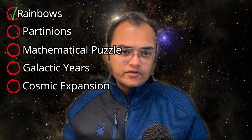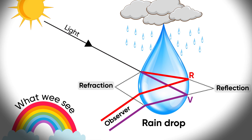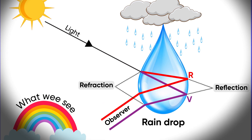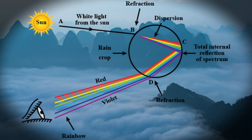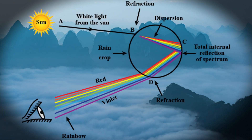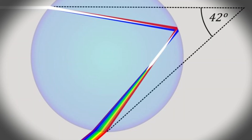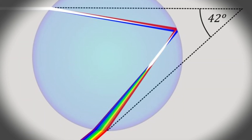The first example is rainbows. Rainbows are beautiful optical effects that occur when sunlight is refracted and reflected by water droplets in the atmosphere. The colors of a rainbow are determined by the different wavelengths of light that bend at different angles when they enter and exit the droplets. The angle between the direction of the incoming light and the direction of the outgoing light is always 42 degrees for a primary rainbow.